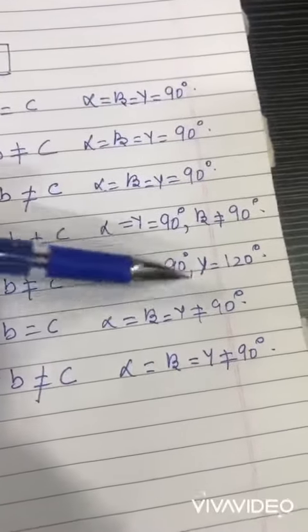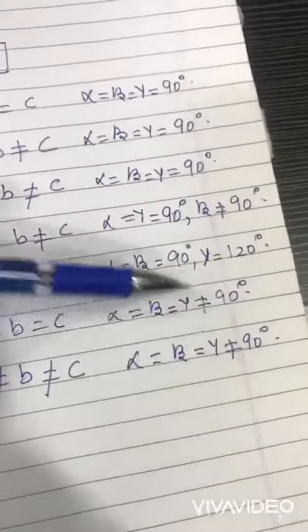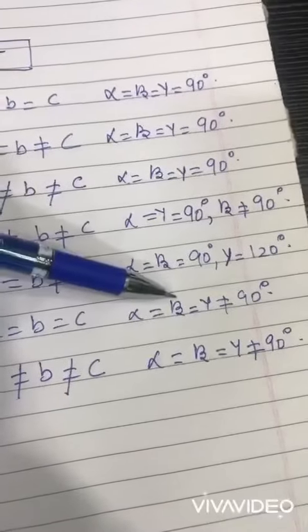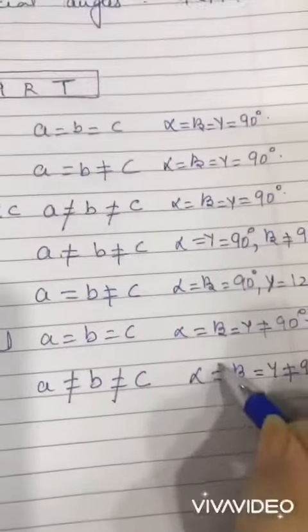And for the last two, that is rhombohedral and triclinic, gamma is not equal to 90, but alpha equals beta. And in this, you can see alpha is not equal to beta, beta is not equal to gamma, gamma is not equal to 90 degrees.